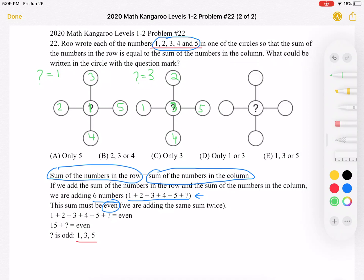And then for our last one, let's say the question mark is equal to 5. So we have 5 in the center. Then we could, for example, have 1, 4, 2, 3. And as you can see, it works for 1, 3, and 5.